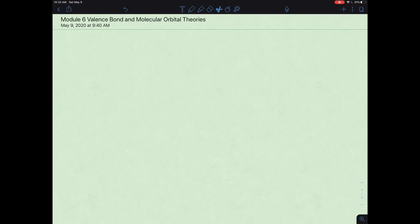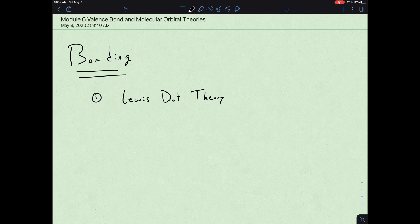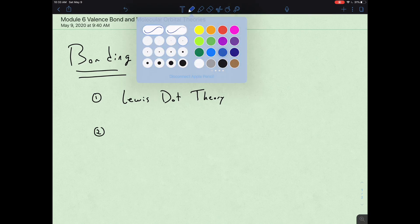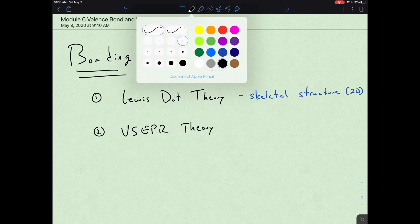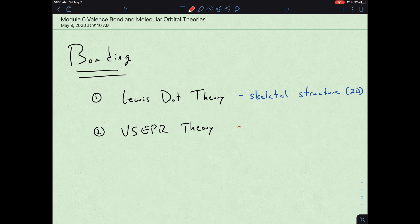Hey, General Chemistry Tribe. We're still in this conversation about bonding. So far we have a couple different models for bonding. We have our Lewis dot theory that helped us get a perspective on the skeletal structure or 2D representation of a molecule. And then we use that in terms of VSEPR theory to get at geometry and a 3D perspective.